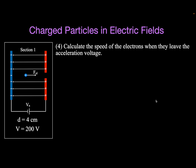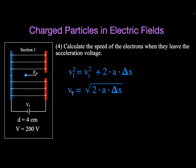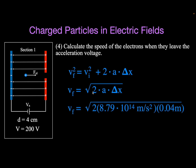Now we're going to get the speed when it leaves the acceleration voltage — when it passes through the gap. We use the kinematic equation: final velocity squared equals initial velocity squared plus 2 times acceleration times change in distance. Since we hold the particle and release it, the initial velocity is zero. So the final velocity is the square root of 2 times A times delta x. With A as the acceleration we calculated and delta x as 0.04 meters, we get a final velocity of 8.39 times 10 to the sixth meters per second.